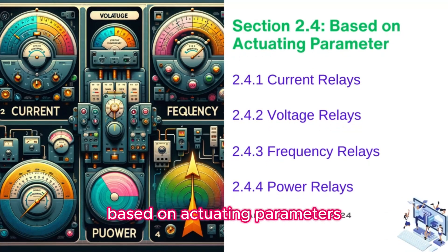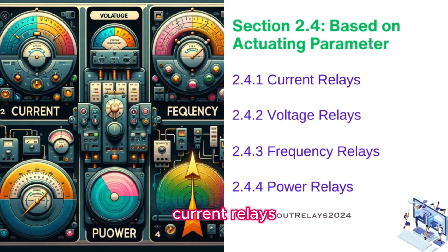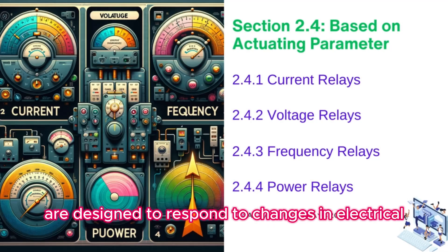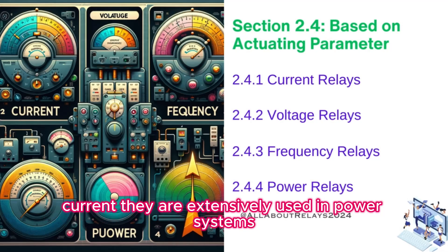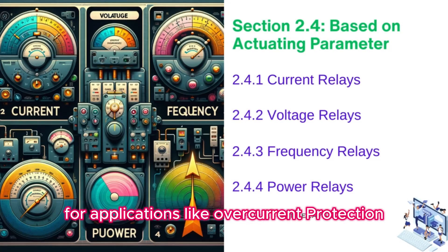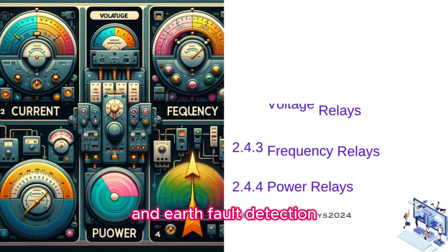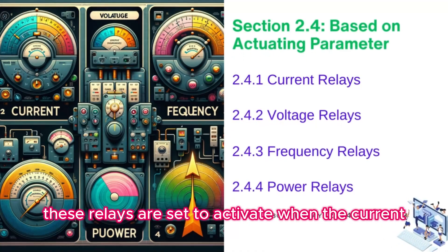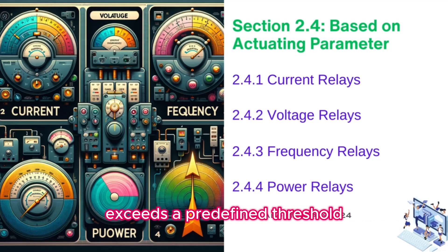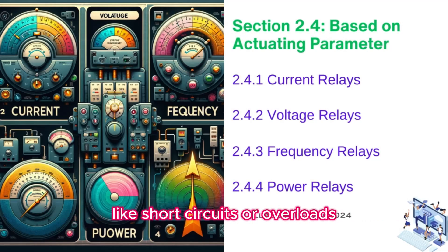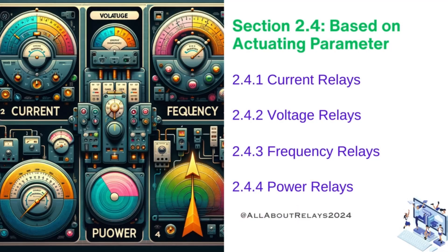Protective relay types based on actuating parameters. Current relays are designed to respond to changes in electrical current. They are extensively used in power systems for applications like overcurrent protection and earth fault detection. These relays are set to activate when the current exceeds a predefined threshold, indicative of abnormal conditions like short circuits or overloads.